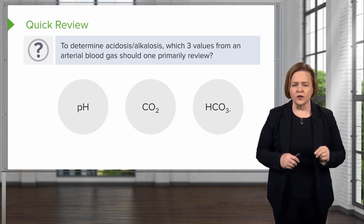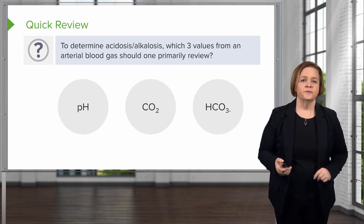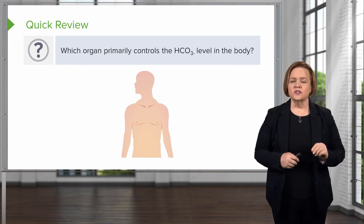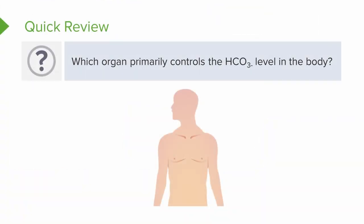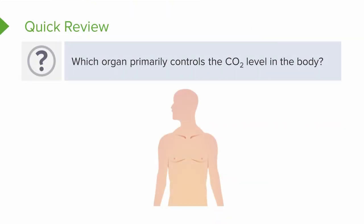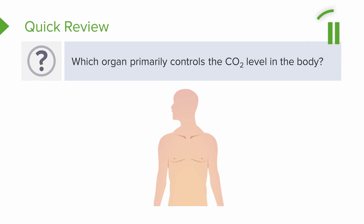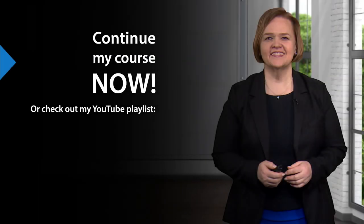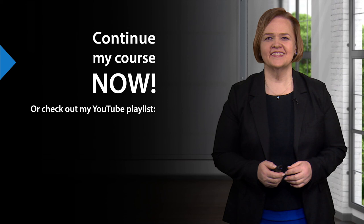Those are the three things we look at when examining values for an arterial blood gas. Which organ primarily controls the bicarb level in the body? HCO3 is just shorthand for bicarb. The answer is the kidneys. Which organ primarily controls CO2, or carbon dioxide, in the body? The answer is the lungs.